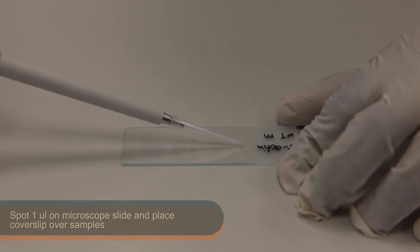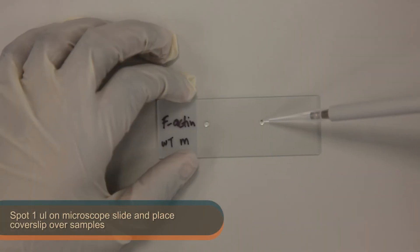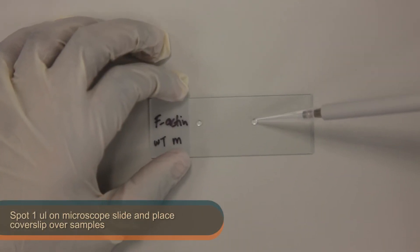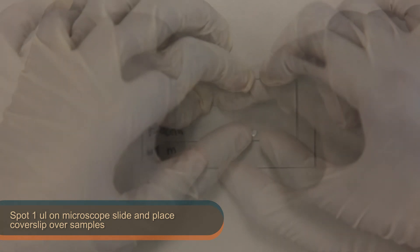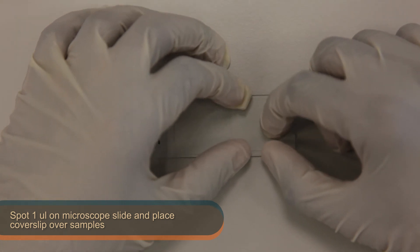Then, spot 1 µl of cell suspension on a microscope slide and place a coverslip over the sample's cavity. Make sure there is ample space for both samples on the slide.